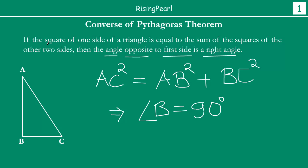We are given this and we have to prove that angle B is equal to 90 degrees. That is, if the square of one side of a triangle is equal to the sum of squares of the other two sides, then the angle opposite to the first side is 90 degrees. So, AC² = AB² + BC², and we have to prove that angle B is 90 degrees. This is exactly the opposite of Pythagoras theorem.